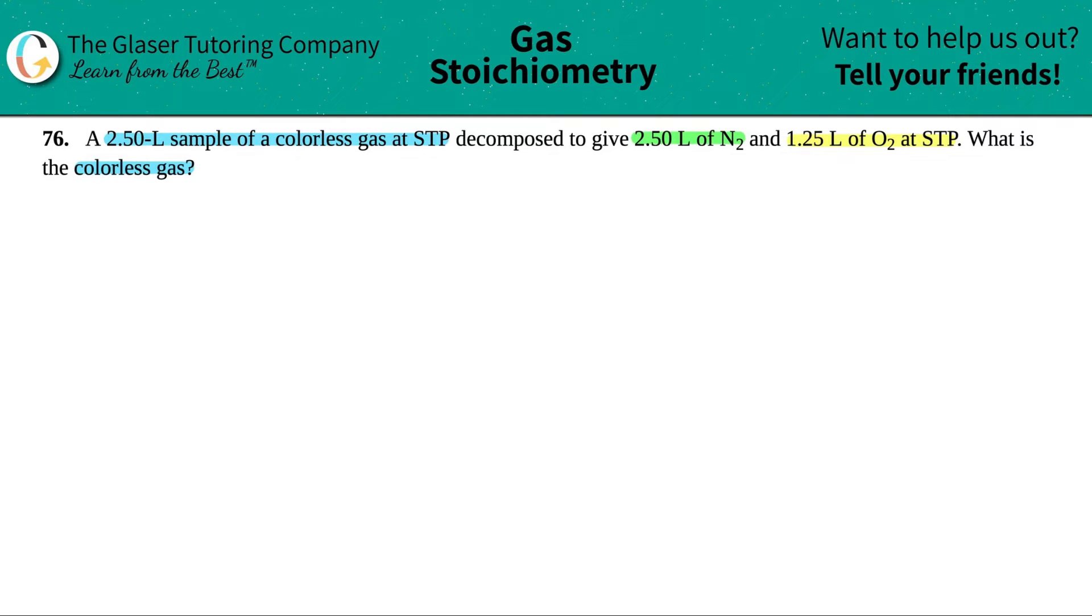Okay. First thing I would say is if they're giving us information about multiple components or compounds or molecules, we have to write a balanced equation. But the problem here is that they didn't tell us what the gas was. We have to find it. But maybe we could figure it out by trying.